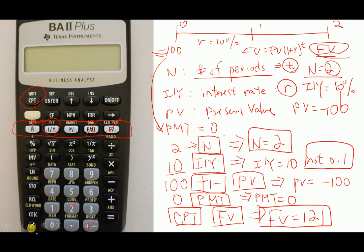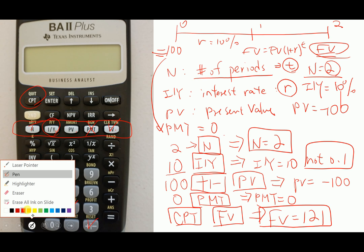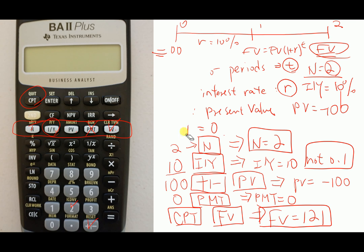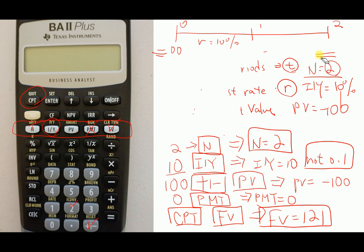Then press CPT — that's Compute — then press Future Value. You must see Future Value equals 121. So your future value is $121. It's a useful and pretty fast way to find the time value of money — future value, present value — compared with using the formula.